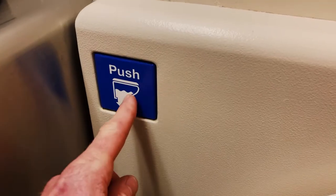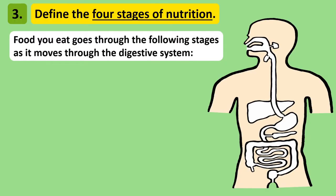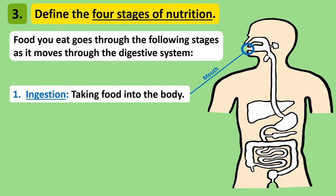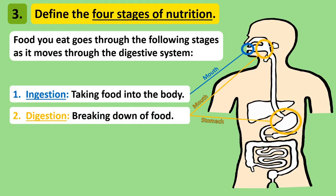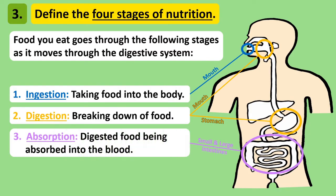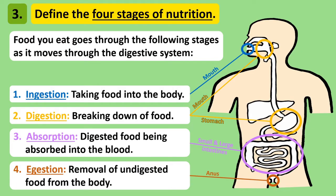So what happens to food along this pathway from the moment it enters your mouth to when it makes its way to the toilet? Well, the food you eat goes through the following four-stage process. The first stage is ingestion — to ingest food means to take it into the body. Once this happens, food goes through digestion, which is the breaking down of food. Once food is broken down into small enough pieces, it then goes through the absorption stage in the intestines, where food is absorbed into the blood. Finally, the egestion stage removes any undigested food from your body.